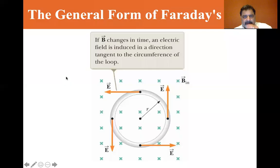We are at section 30.4, the general form of Faraday's law. This should be a short little video. If we look here, we have a magnetic field going into the board and we have a loop. If the magnetic field is changing, then we're